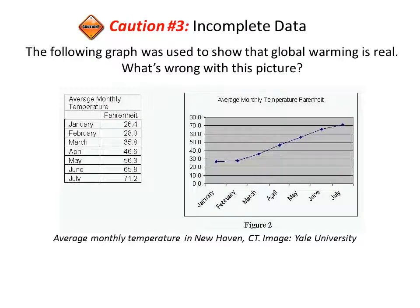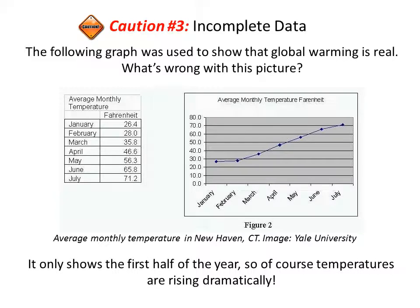Our next caution is incomplete data. The following graph was used to show that global warming is real. What's wrong with this picture? Well, it only shows the first half of the year, so of course temperatures are rising dramatically.